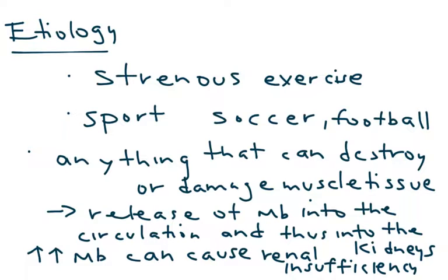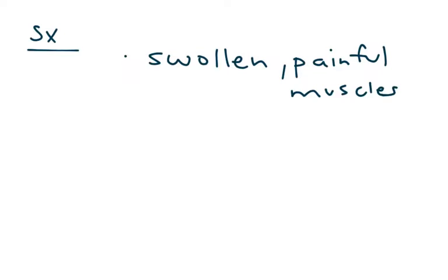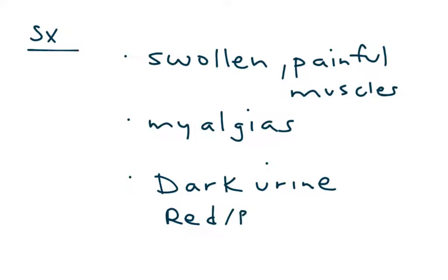So that's sort of the flow of events in myoglobinuria. Symptoms: if somebody does have myoglobinuria and the preceding events, what type of presentation will the patient present with? He or she will have swollen and painful muscles. The patient will also have, in addition to myalgias, a very characteristic appearance of their urine. It will be dark, often described as red to brown.